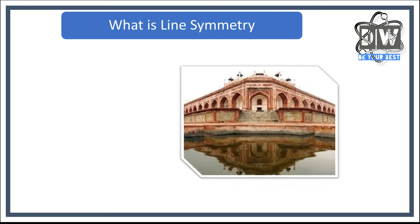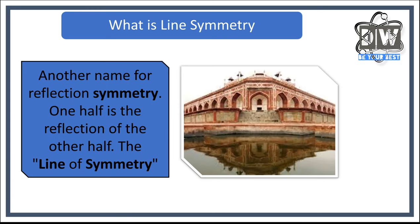What is line symmetry? We can see here on this picture we've got a building, and we've got what we call a mirror line. It looks exactly the same on each side of that mirror line — it's a mirror or reflection of the shape. That is the line of symmetry. In this picture it happens at the water's edge. One half is the reflection of the other half.